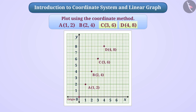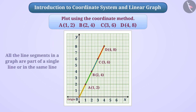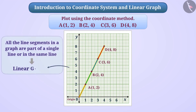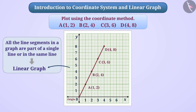Let's connect all these points with line segments. You can see that line segments AB, BC and CD lie in the same line. Thus, if all the line segments in a graph are part of a single line, then such a graph is called a linear graph.